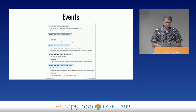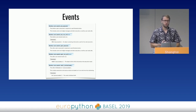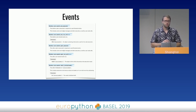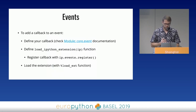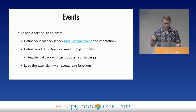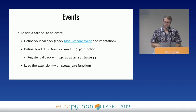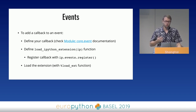We talked about magic functions and extensions — a lot of extensions define magic functions you can use. But extensions can also register callbacks to IPython events. IPython defines a set of events like 'before I run the code', 'after I run the code', 'after I start IPython', and you can plug in custom functions to be executed during those events. To add a callback, you need three things: create the callback function (check documentation to see what parameters each callback receives), define the `load_ipython_extension` function and register the callback inside it, then load the extension.